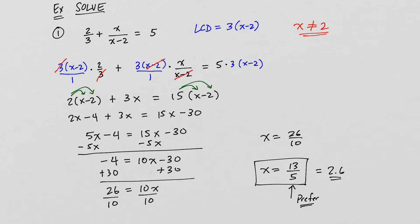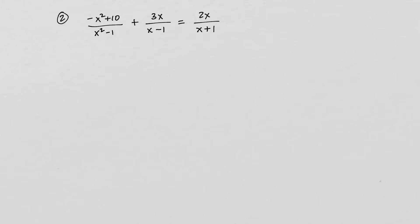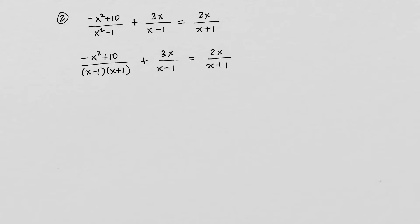Let's look at some other examples. In this example, we have another rational equation, and the first thing we want to do is find the least common denominator. To do that, we need to factor. The denominator x squared minus 1 is the difference of two squares, and its factors are x minus 1 times x plus 1. After that factorization, the least common denominator is x minus 1 times x plus 1. We remember that x cannot equal 1 and x cannot equal negative 1, because those make a denominator equal to zero.